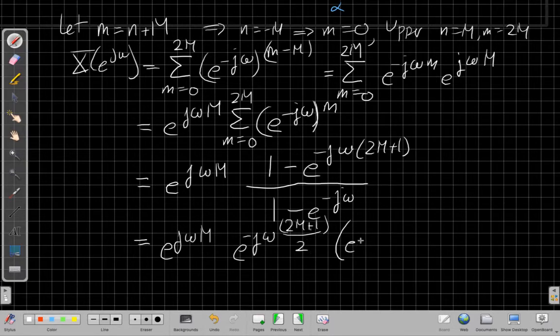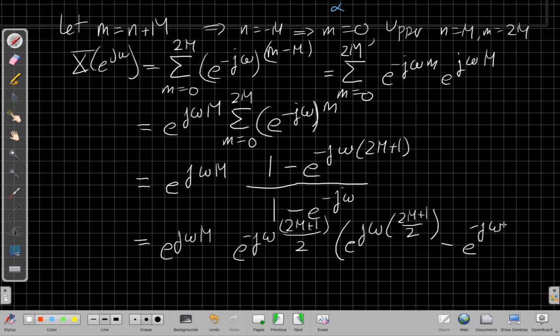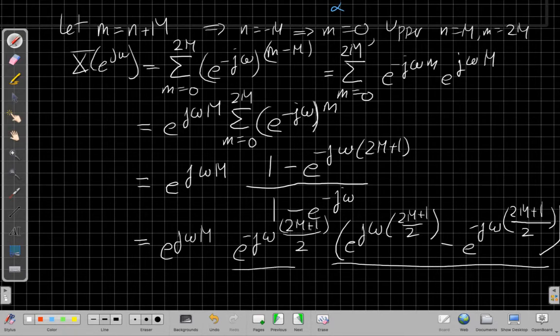And so if we do that, we say in this case I'd factor out e to the minus jω(2M+1)/2. Factor that up front. Well, the 1 would just leave the same thing, only with a plus sign. So I have e to the jω(2M+1)/2, because if I multiplied this back in here, the exponents would cancel out. I'd have e to the j0, which is my 1 again. And then for the other term, I've just pulled out half the exponent.